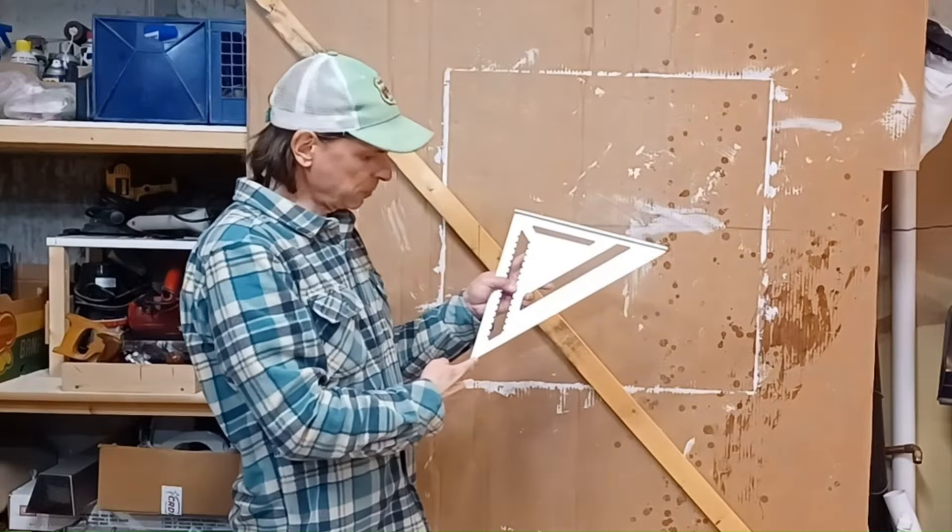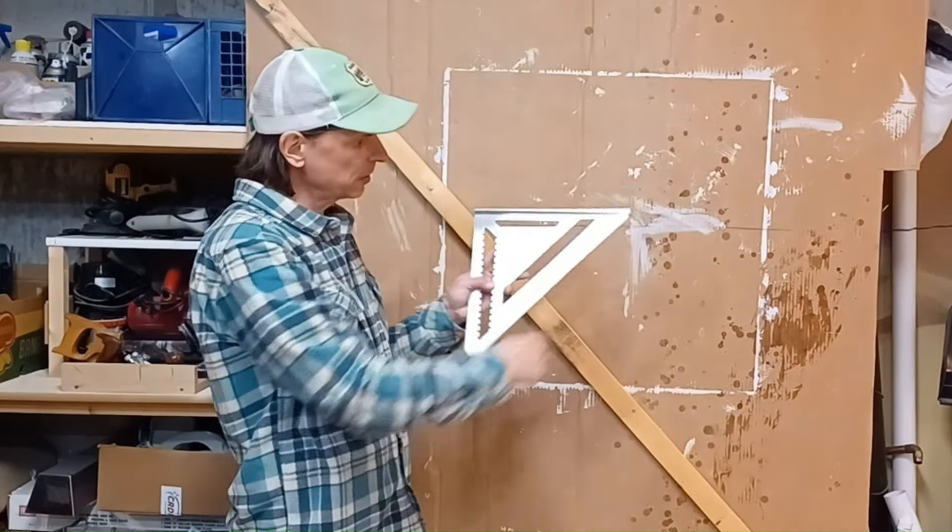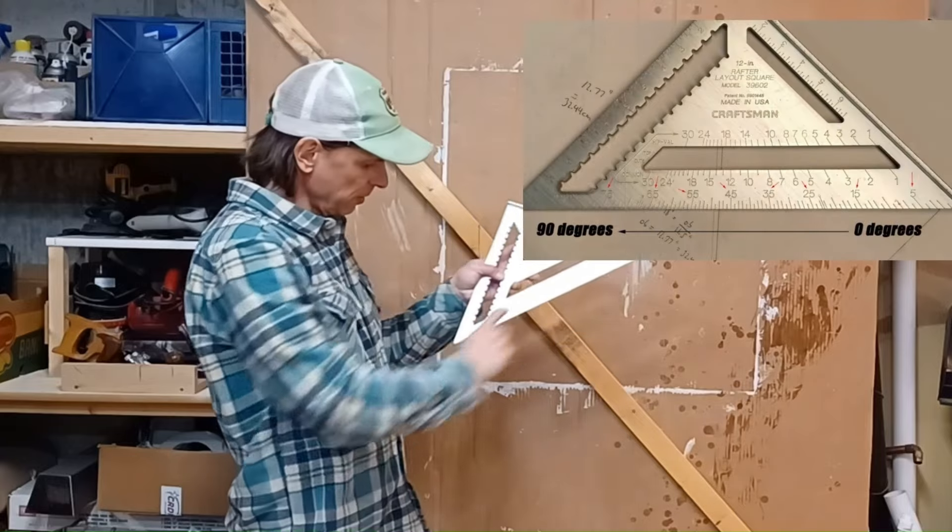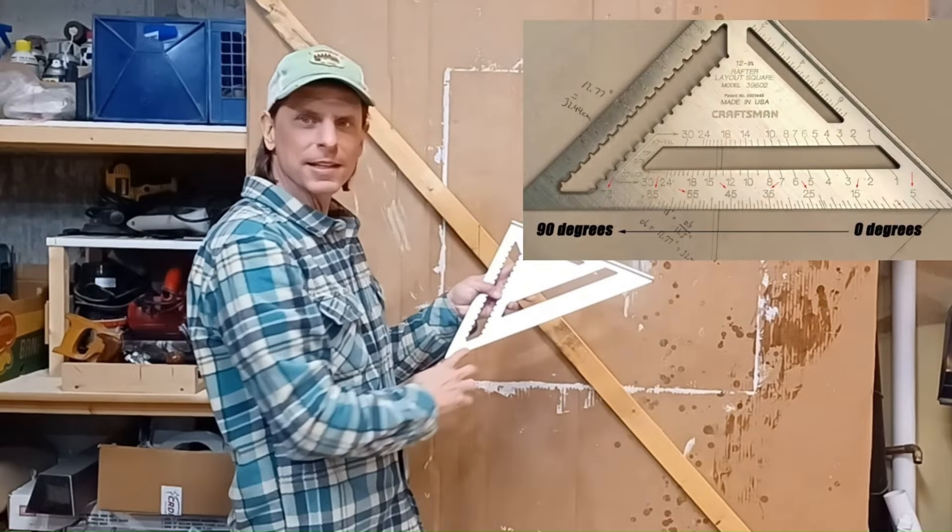Along the bottom of your speed square, the hypotenuse, there are markings from 0 to 90, and they represent angles.